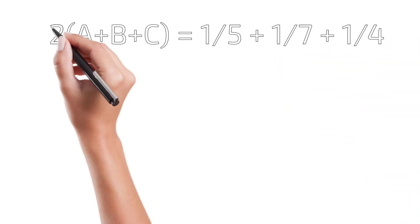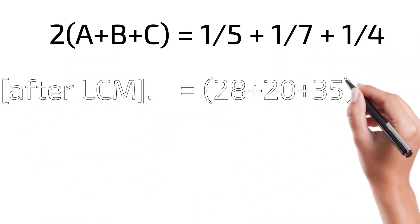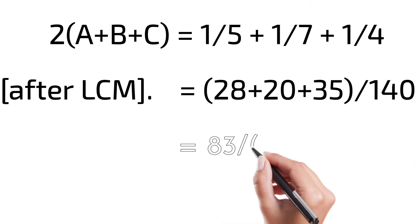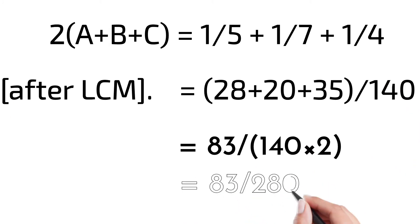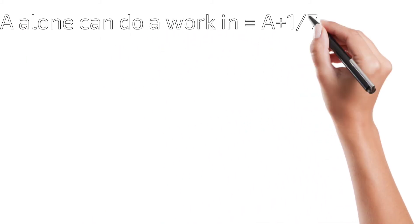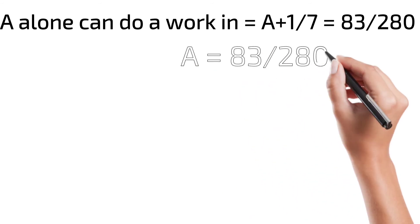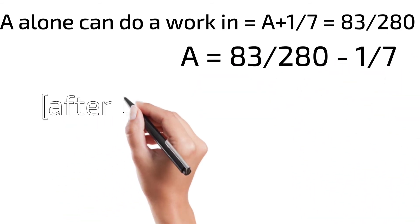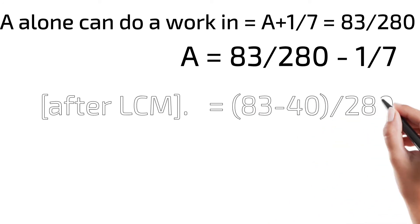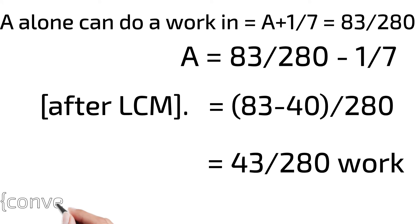2(A + B + C) is taken because A, B, and C each appear twice in the three pairs. So here two A, B, C is calculated. LCM is found, giving 83 by 280. Pause the video and understand this once. LCM is taken, so 43 by 280 work is obtained — that is work, not time.